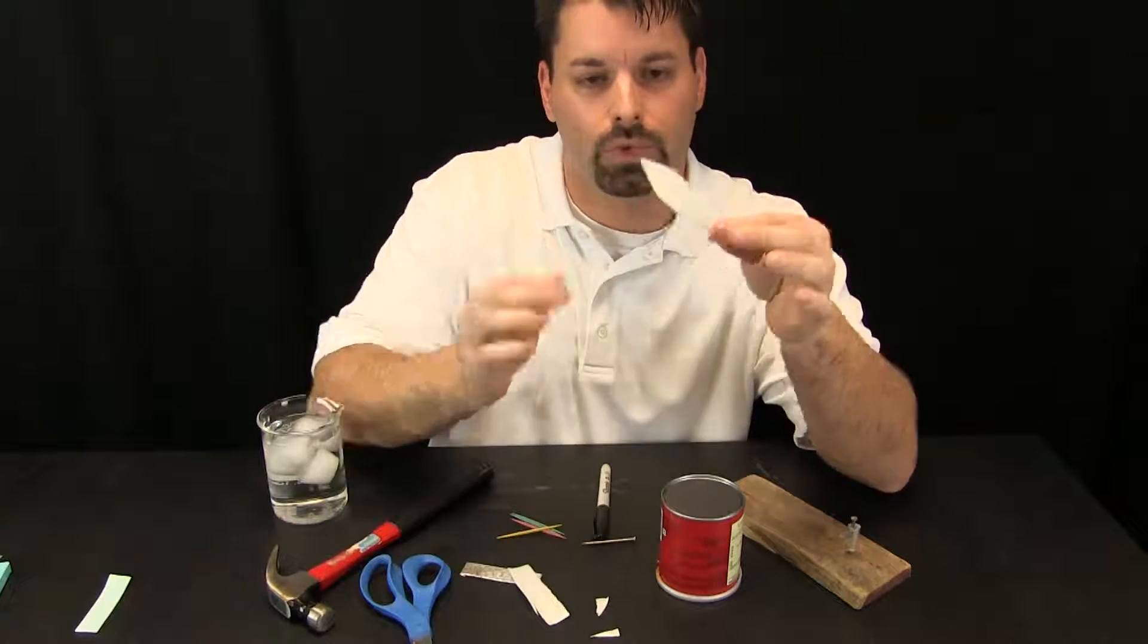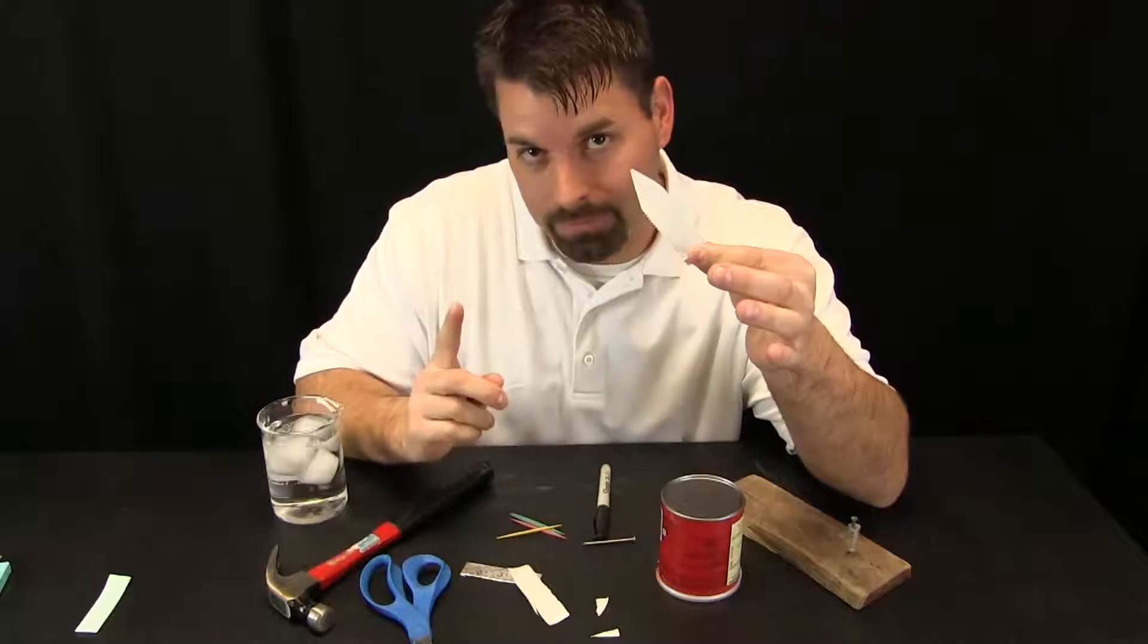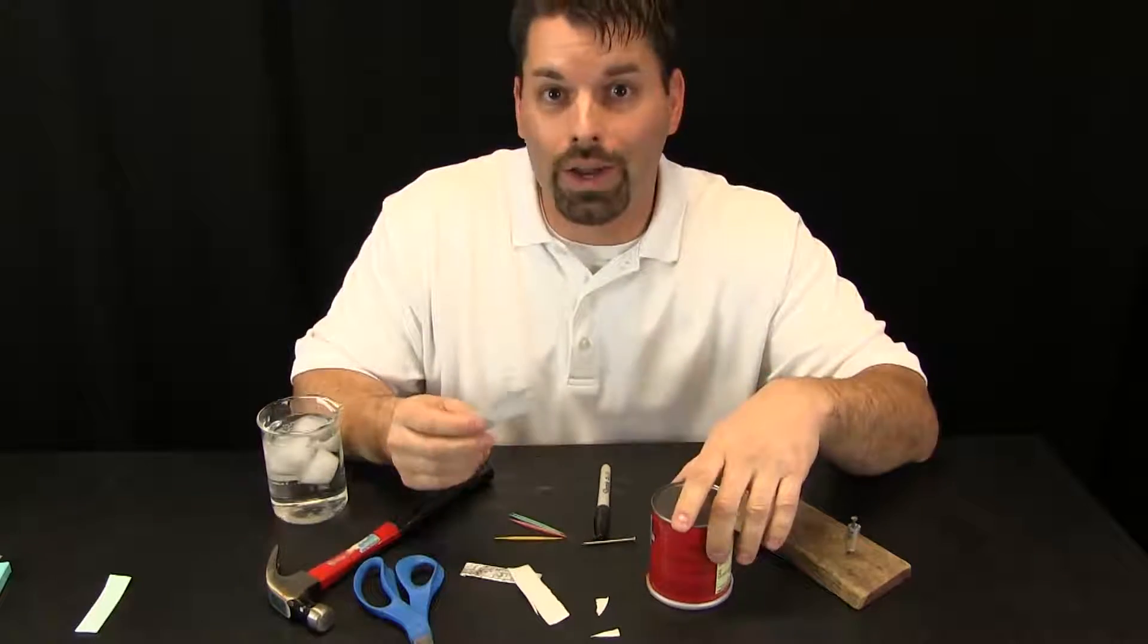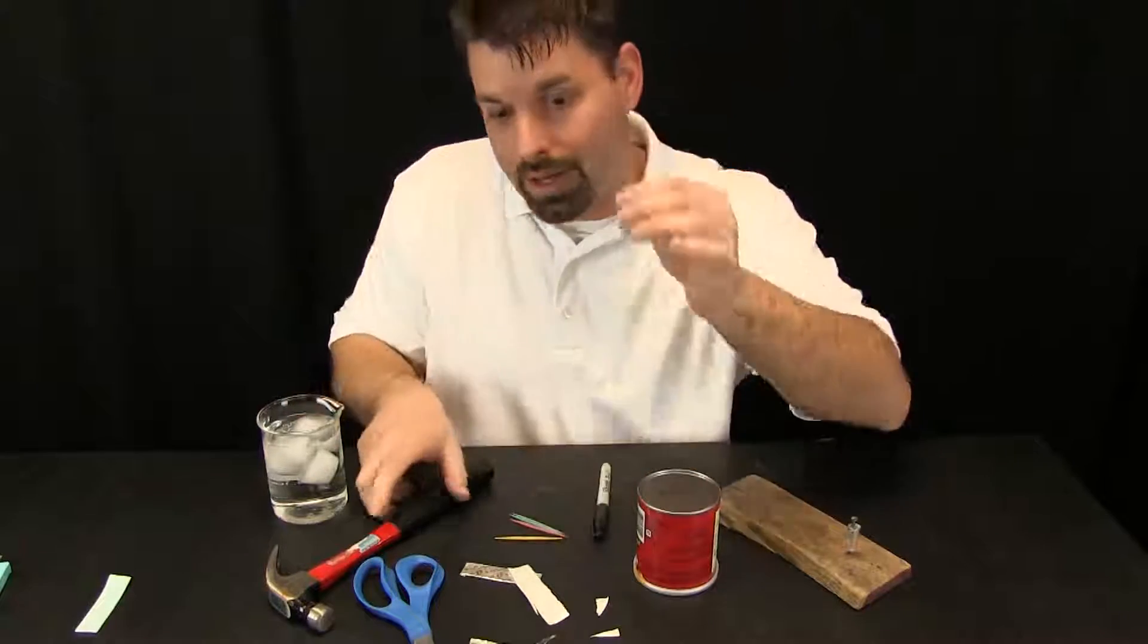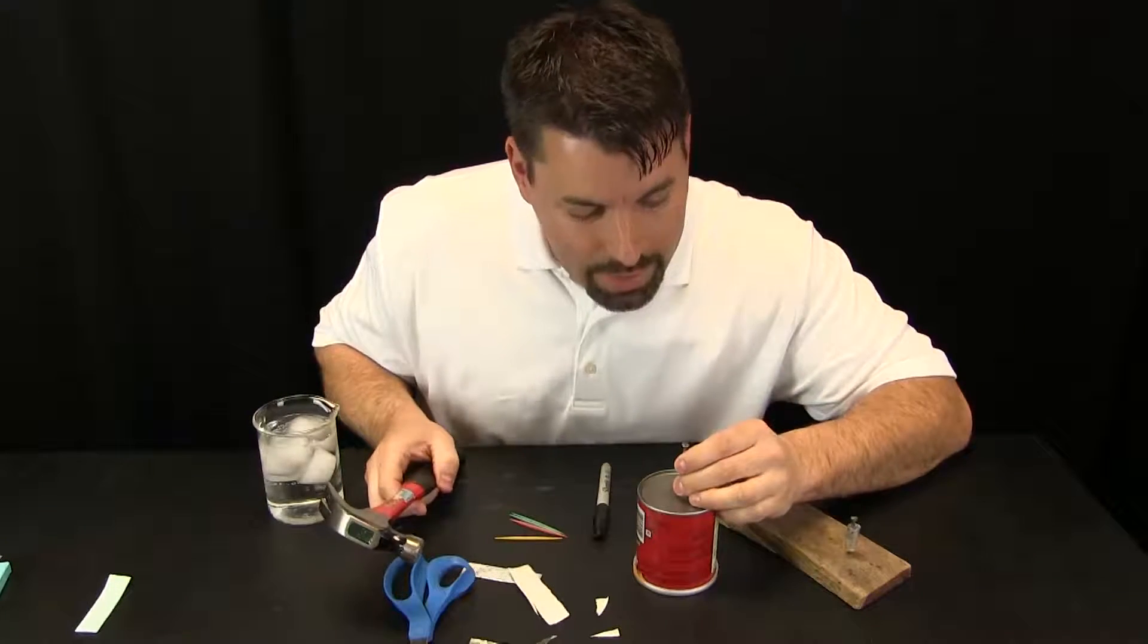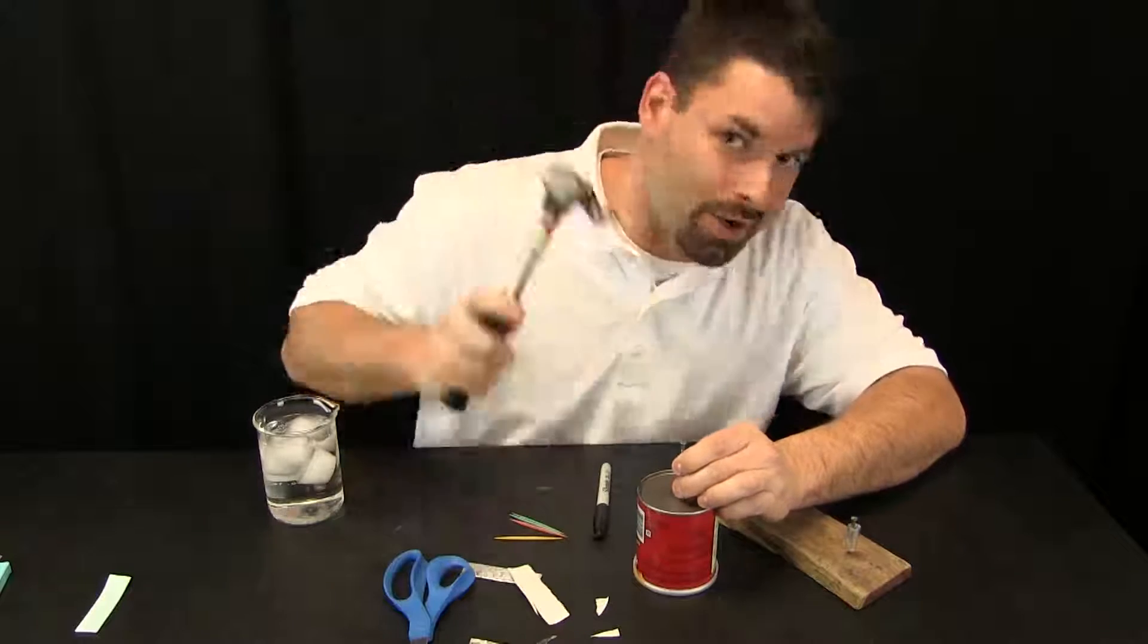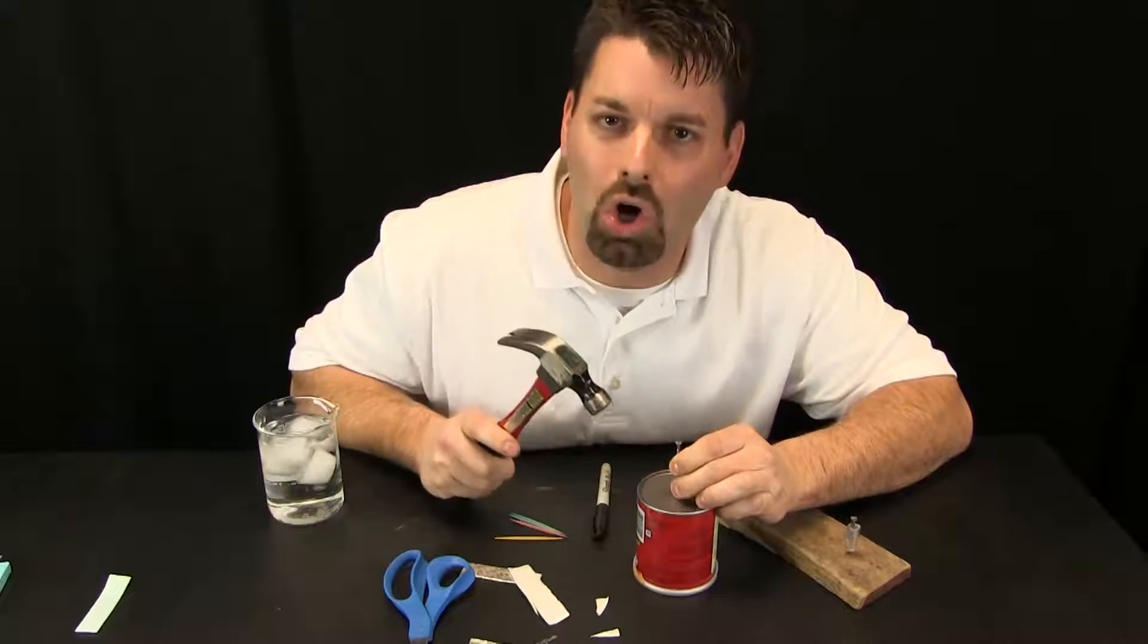Snip, snip, snip. So I have a foil pointer, first step. Now I need to actually poke a hole in my can. So I am going to use a nail and a hammer to do that. I want to try to get it in the center, and I am not going to drive the nail all the way through. I just want a small hole.